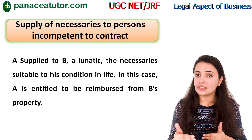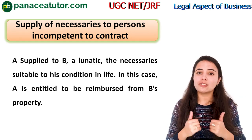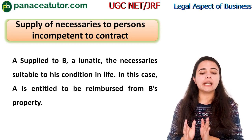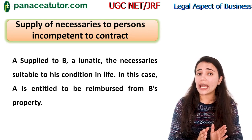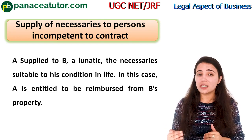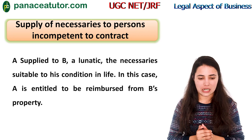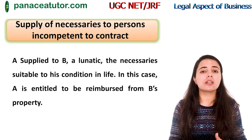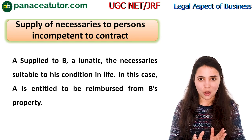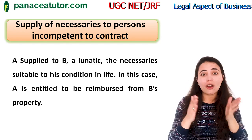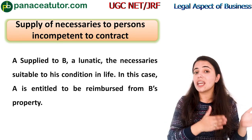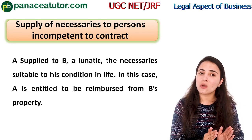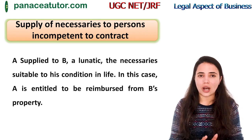We have learned that the basis of quasi-contract is: no man can enrich himself at the expense of another. For example, A supplied goods to B, who is a lunatic. In this case, A is entitled to be reimbursed from B's property. A and B had no express agreement, neither did they have such an intention, but the law created an obligation that A will get a part of B's property. This is our quasi-contract.